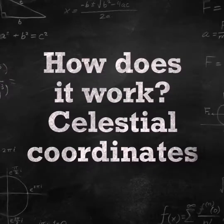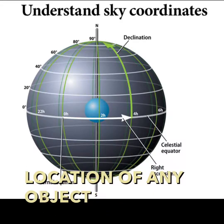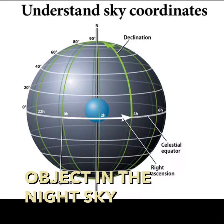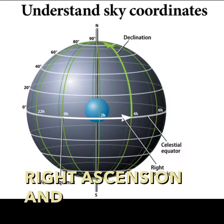How does it work? Celestial coordinates. We can give the location of any object in the night sky by specifying its right ascension and declination.